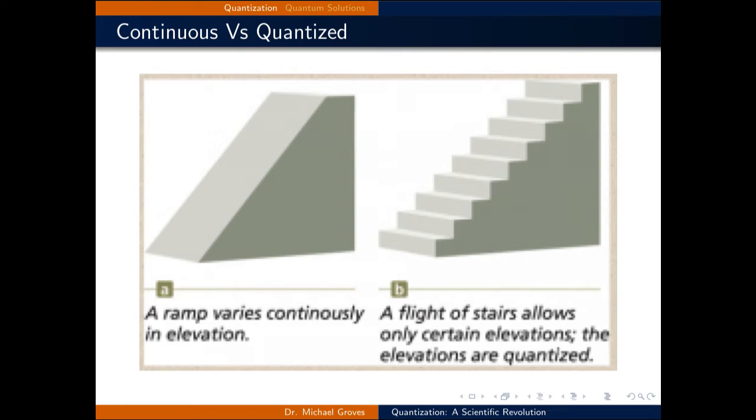One major difference between a classical and a quantum worldview is that in a classical framework the values of energy can take on any value continuously. In a quantum framework the energy can only occur in discrete intervals. These two concepts are illustrated here by a ramp and a staircase. If someone were to walk up the ramp, the height change of the person can take on any value between the top and the bottom, hence the person's height is continuous.